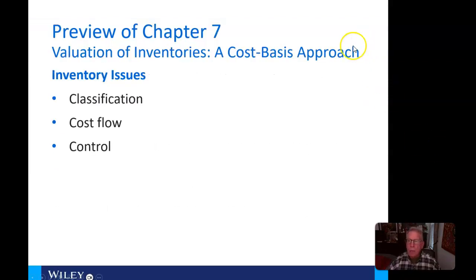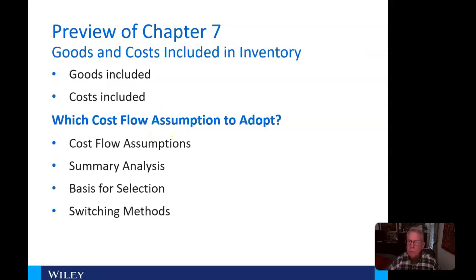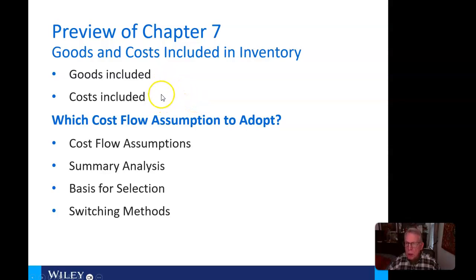As we preview Chapter 7, we're going to look at some inventory issues in classification, cost flow, and control. Then we'll look at what goods and costs are included in inventory — what are included goods, what are included costs, and which cost flow assumption to adopt.